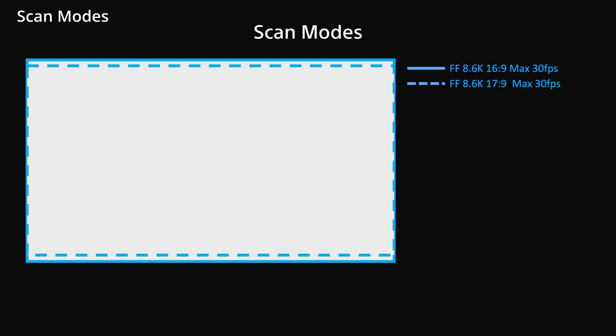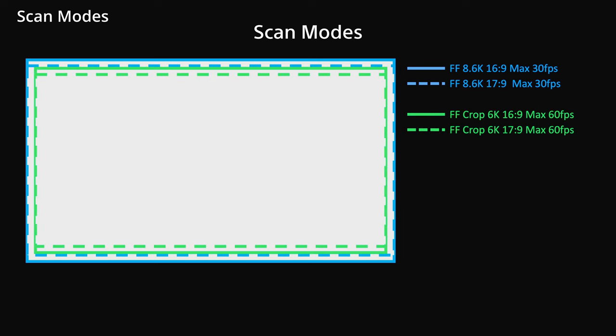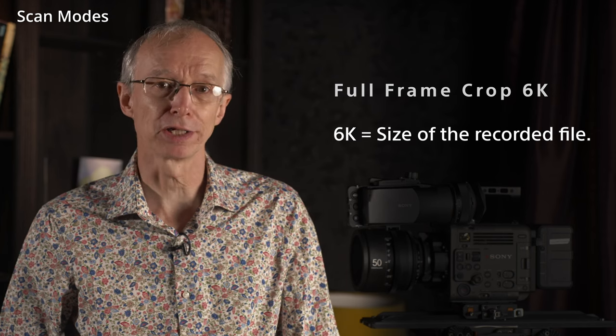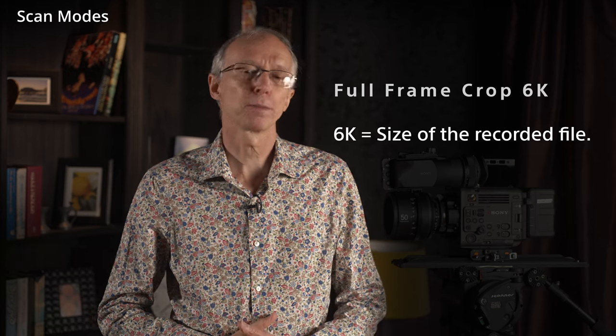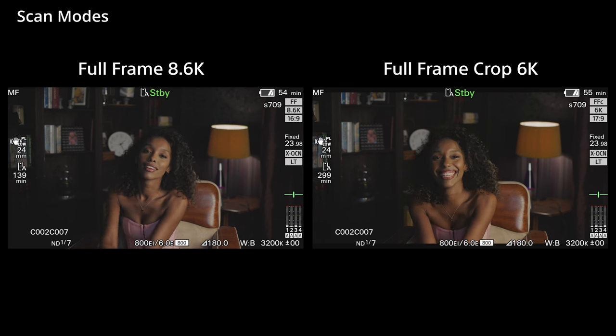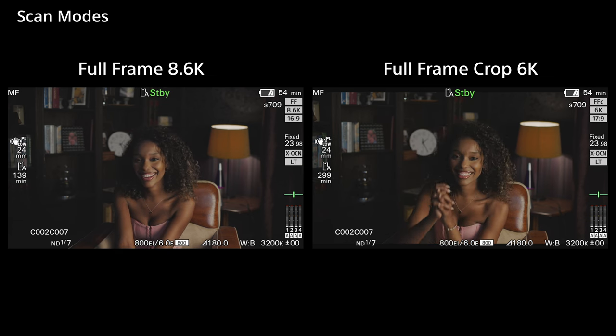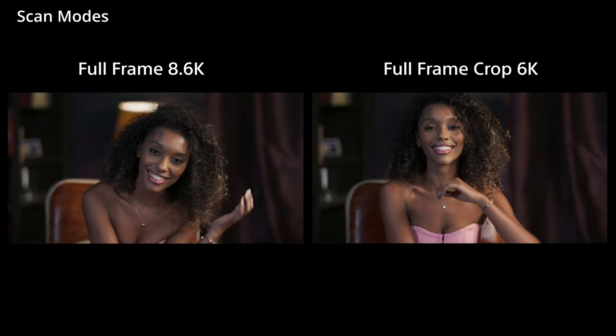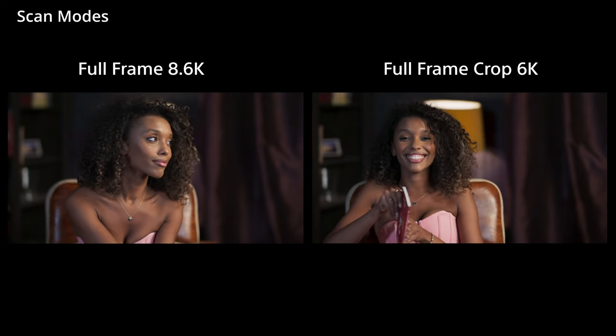If you wish to shoot at frame rates higher than 30 frames per second, you'll need to use the camera's full-frame crop 6K mode. Note that in the case of the full-frame crop 6K modes, the 6K refers to the size of the recorded file, not the scan size. The full-frame crop 6K 17x9 and 16x9 scan modes still read almost the entire width of the full-frame sensor — there is very, very little crop, only about a 1.07 times crop. This large, near-full-frame 8K scan is then down-sampled to 6K for recording.